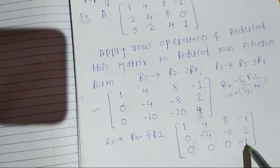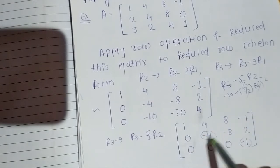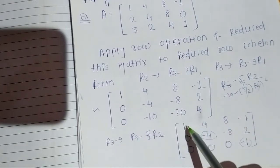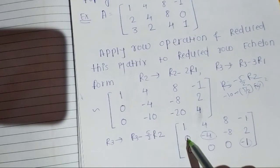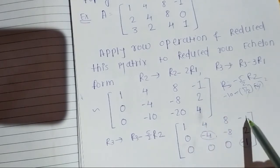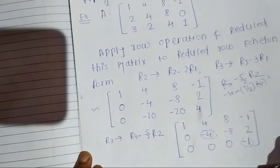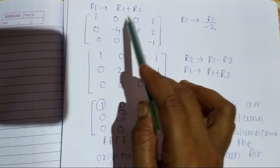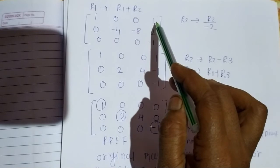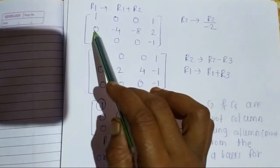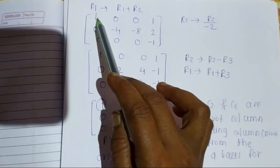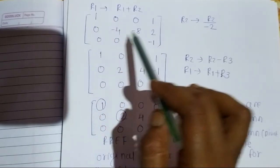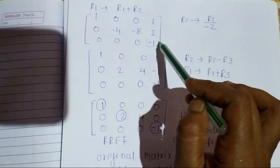Applying further row operations: 4 minus 4 = 0, 8 minus 8 = 0, -1 plus 2 = 1. Then R1 → R1 plus R2: -4 plus 4 = 0, -8 plus 8 = 0, -2 minus 1 = 1. After this, the first row changes. Now the first diagonal is in place, second diagonal above is 0, below is 0, but the third diagonal element here is -1.